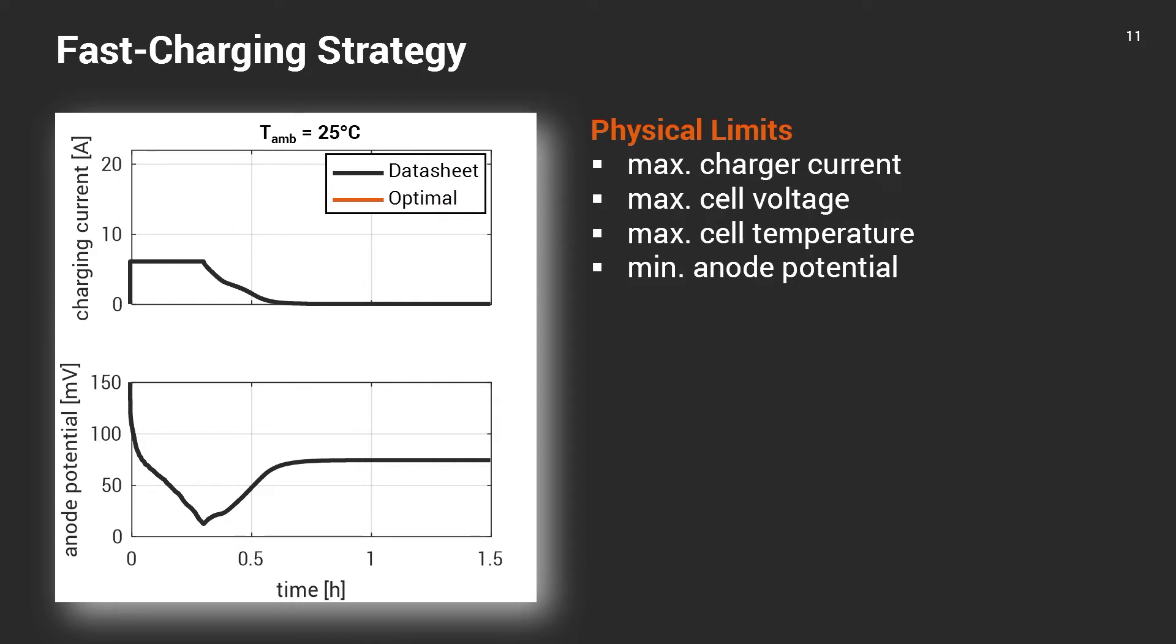But can we charge faster? Well, what are the limits in general? And there are four. The first is the maximum charger current that the charger can supply. The second is the maximum cell voltage that the cell can withstand. If you would exceed this voltage, the cell would age. The third is the maximal cell temperature. Again, if you would exceed this temperature, you would get side reactions and the cell would age. And the fourth is the one that I just introduced, the minimum anode surface potential.